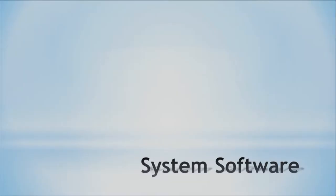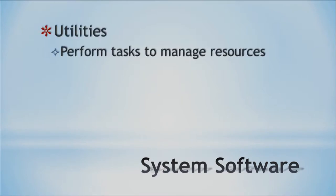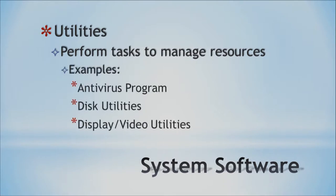Now let's look at the different utilities that the operating system and your system software uses to make things easier. Utilities help perform tasks to manage your resources — from your system memory to your hard drive to your CPU. Examples include your antivirus program, which you should be running to help protect your system from viruses. You also have disk utilities and display and video utilities to help with performance and get your display configured as you wish.